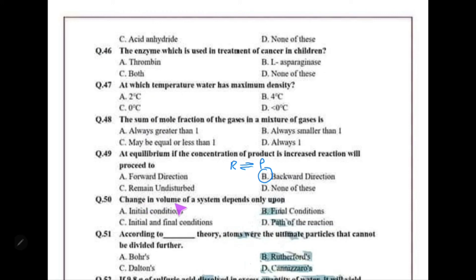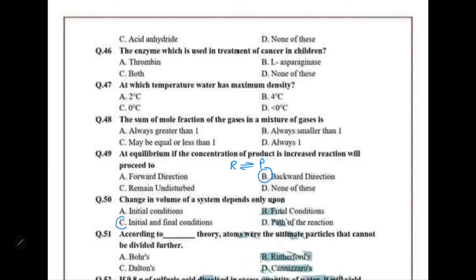Change in volume of a system depends only on the initial and final conditions — it is a state function. It does not depend on the path of the reaction, only on initial and final conditions.